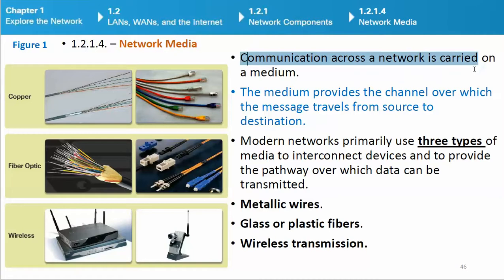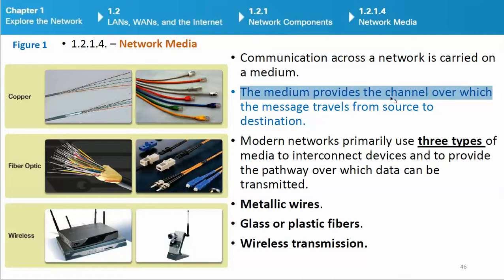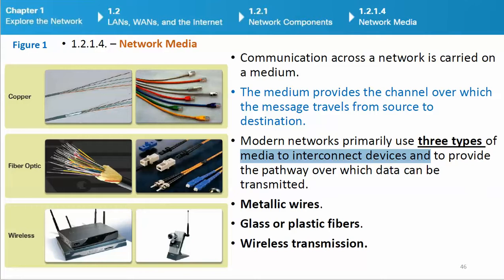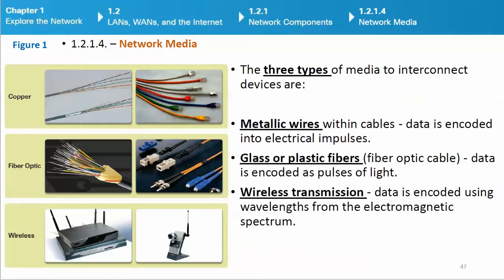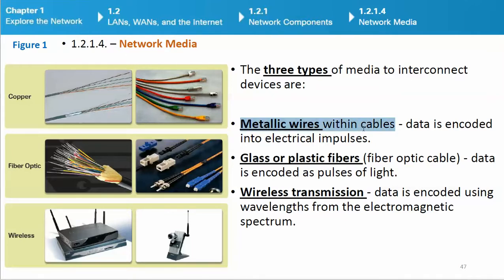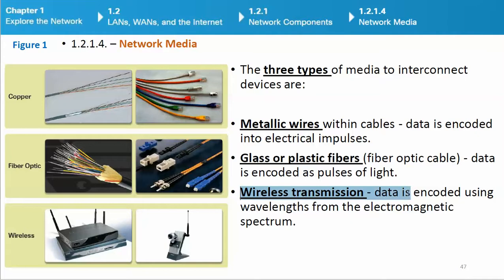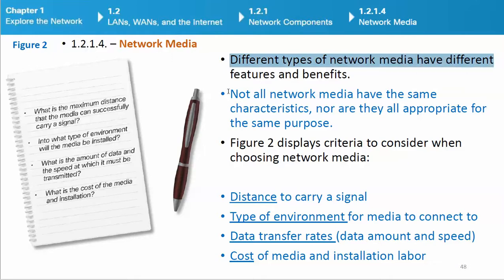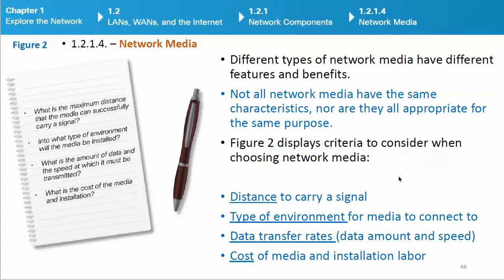Communication across a network is carried on a medium. The medium provides the channel over which the message travels from source to destination. Modern networks primarily use three types of media: metallic wires within cables, where data is encoded into electrical impulses; glass or plastic fibers (fiber optic cable), where data is encoded as pulses of light; and wireless transmission, where data is encoded using wavelengths from the electromagnetic spectrum. Different types of network media have different features and benefits, and not all are appropriate for the same purpose.